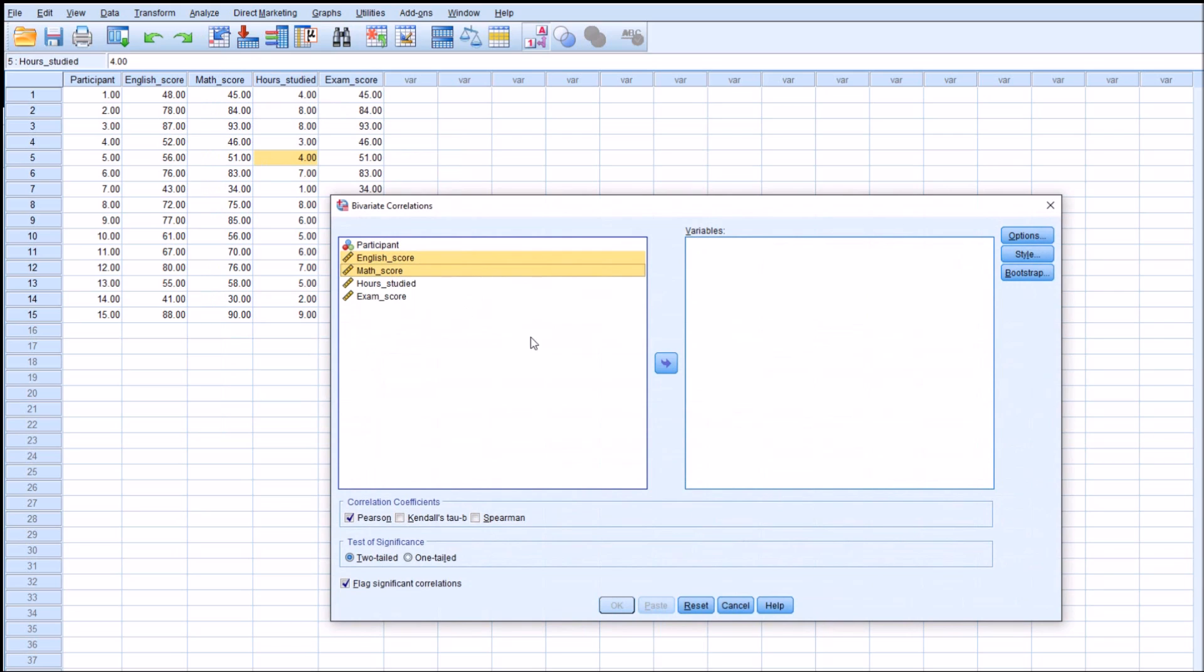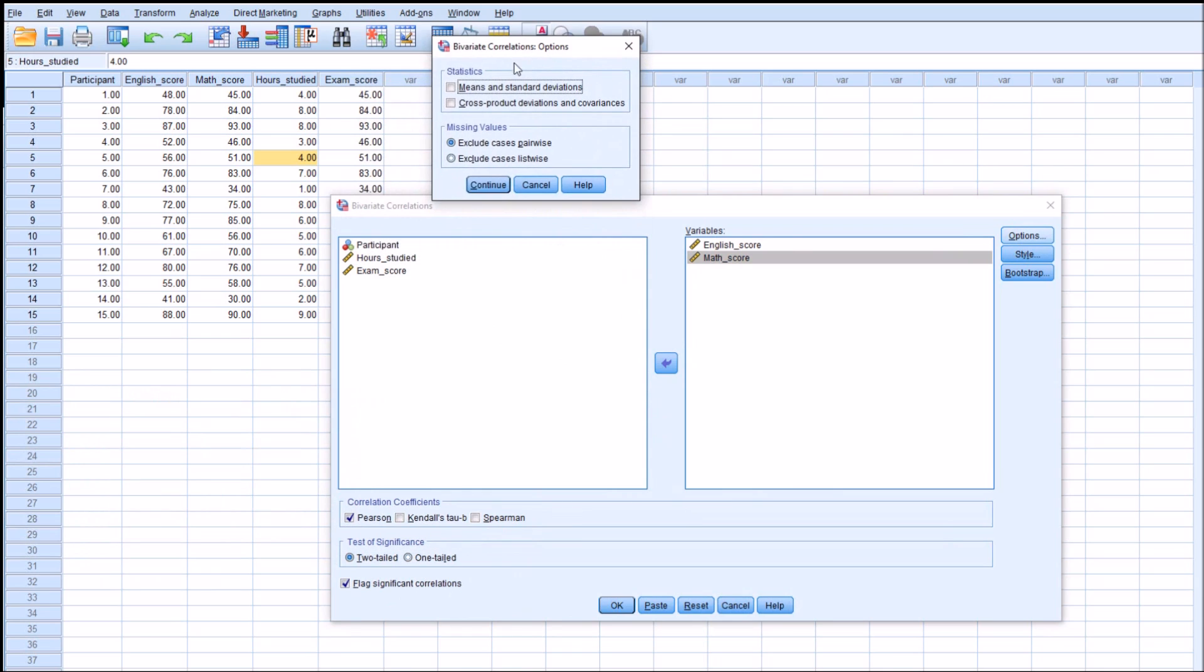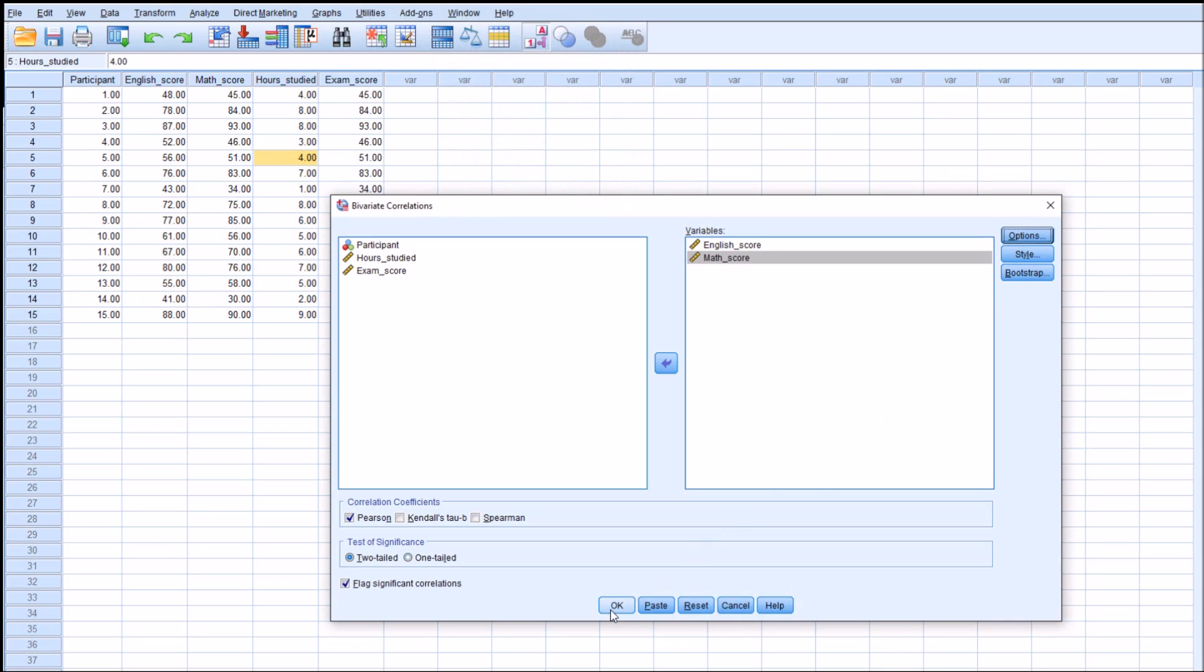Now you want both of the variables that you want to determine the relationship between to be in the bivariate correlation. And because we're doing Pearson, you only need to click on the Pearson correlation coefficient. It's always useful to flag significant correlations, because otherwise you have to look through every single significance value. The options here, we can calculate the means and standard deviations and the cross product deviations and covariances. I don't really need to look at that to see my overall correlation. So I'm just going to click OK.